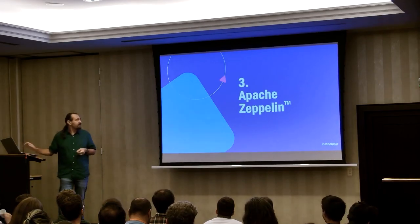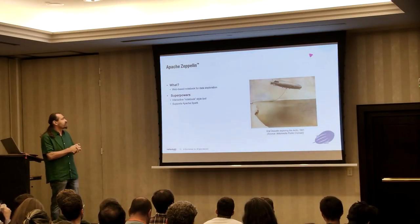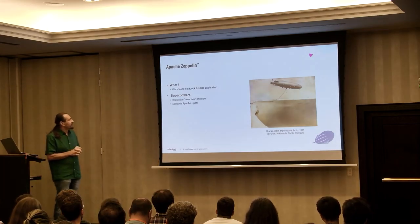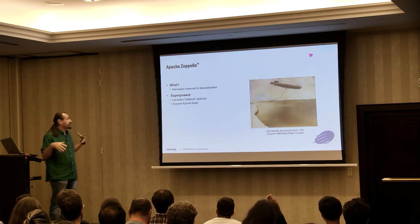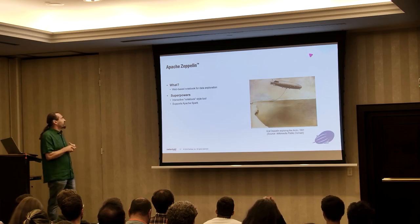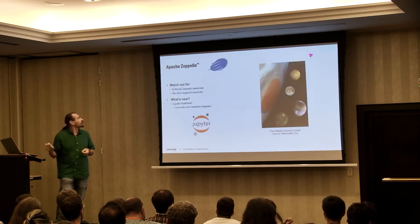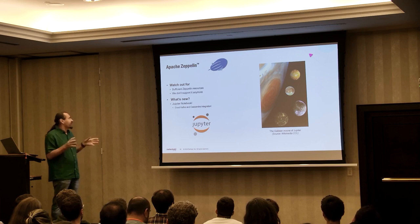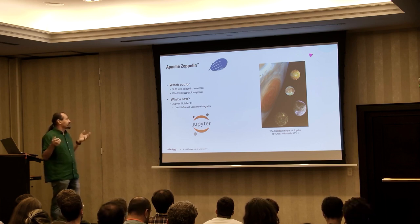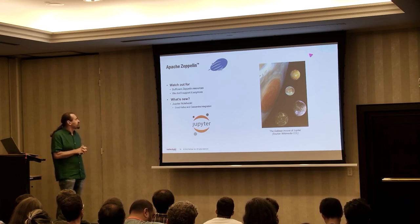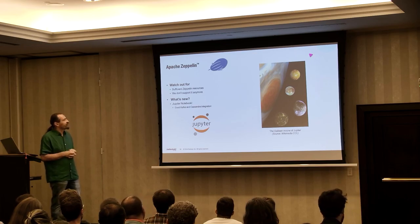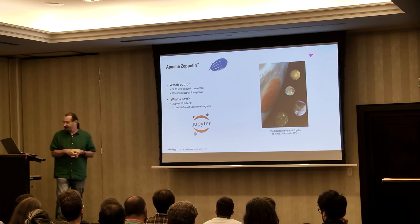Number three: Apache Zeppelin. It's a slightly older technology, but I thought I'd mention it — it's a web-based notebook for data exploration. It's an interactive notebook-style tool and it supports Apache Spark pretty well. You do need to watch out that you have sufficient resources for Zeppelin, and we actually don't support it as part of our managed service platform anymore. Jupyter is the new kid on the block, with good Kafka and Cassandra integration, and it seems to be what people are increasingly using.